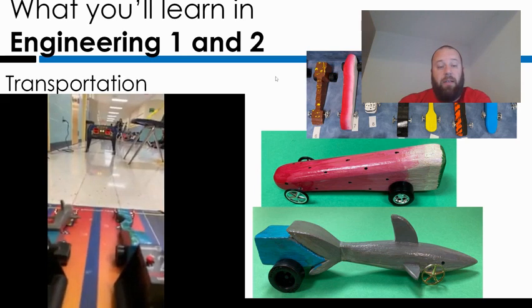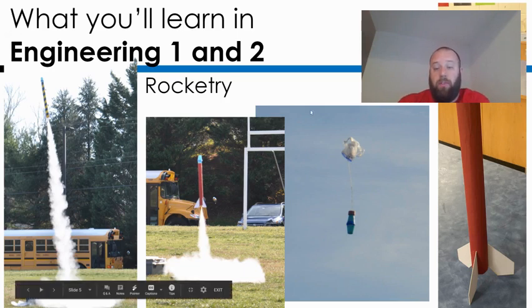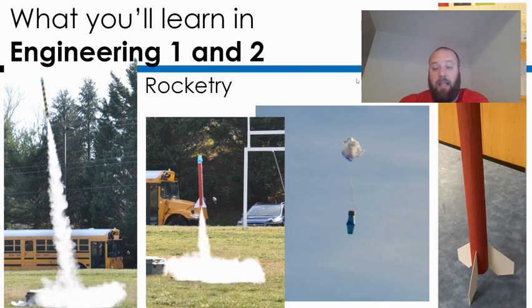The next unit is our rocket unit where we build rockets and then shoot them off. Shooting them off is a lot of fun. In Engineering 1 and Engineering 2, we design a nose cone that either holds an egg or a potato chip. You can see one of those nose cones coming back down right here that contained an egg, and then the parachute making sure it lands safely on the ground without breaking.